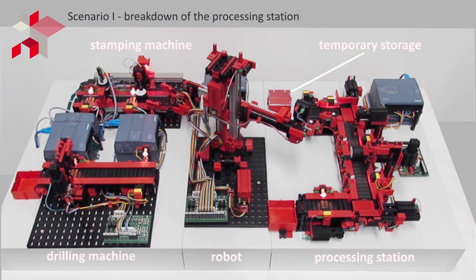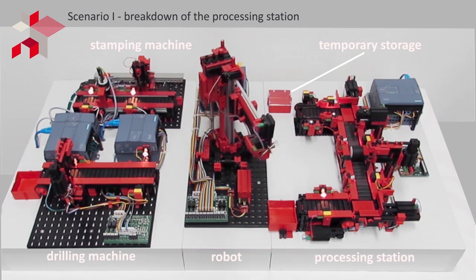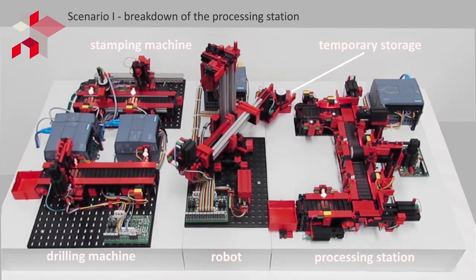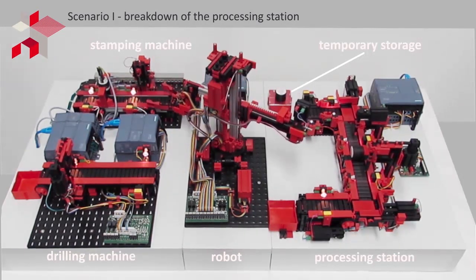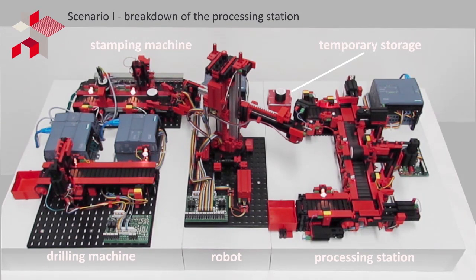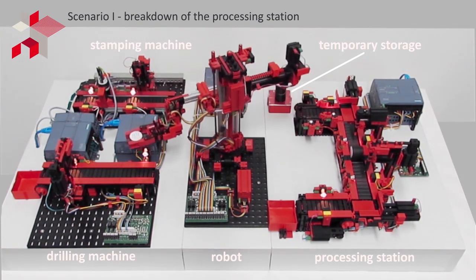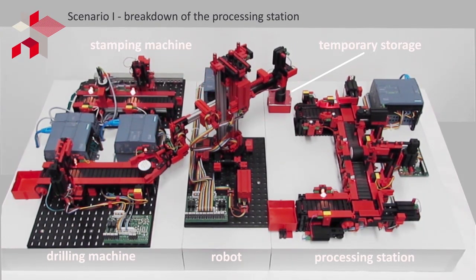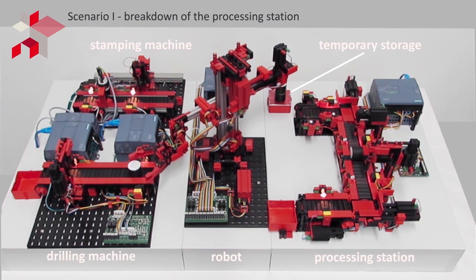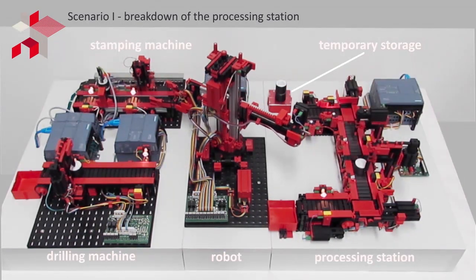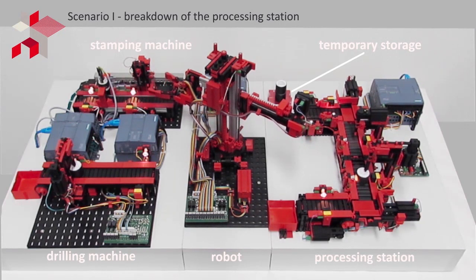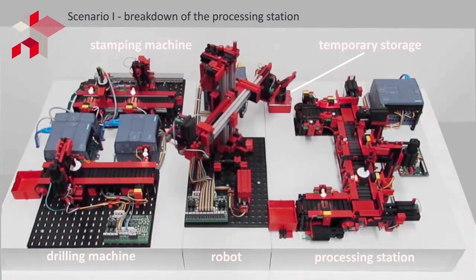The robot stops parts from bunching together and at the same time reroutes the parts meant for the defective station to a temporary storage. Pieces to be processed on the drilling machine are handled simultaneously by the robot. As soon as the malfunction is fixed, the workstation sends a signal to the robot, and the parts are taken out of storage and the scheduled production process continues.